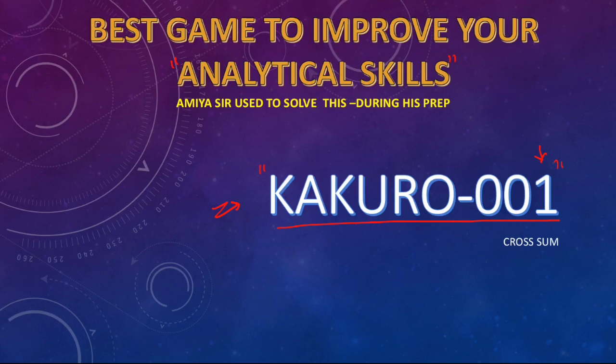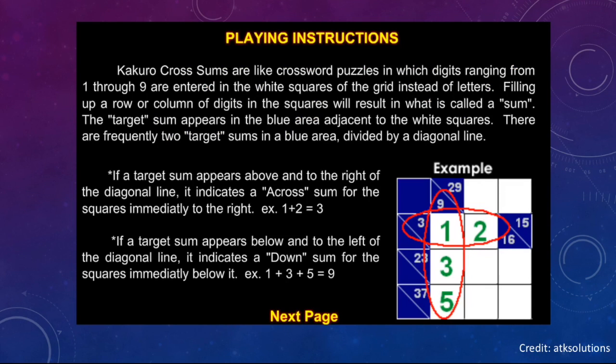First of all, you must know what is Kakuro. Kakuro is nothing but a cross sum game in which we have to use only digits 1 to 9. So, what are the playing instructions? You have blue or black box. Say, this one is 9. Then the summation of all boxes must be 9. If it is written downward, say 29, the summation of all white boxes should be 29.